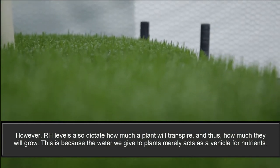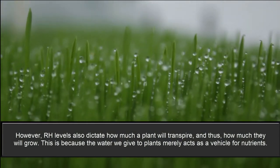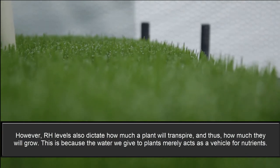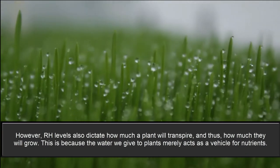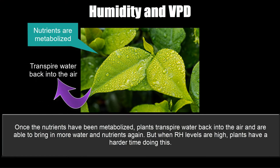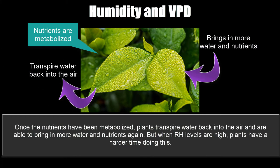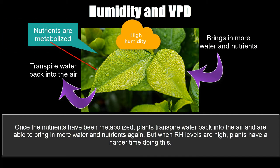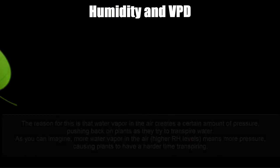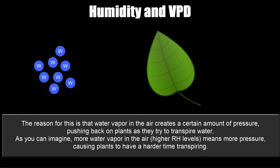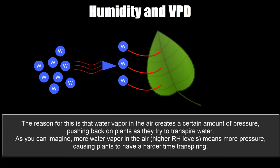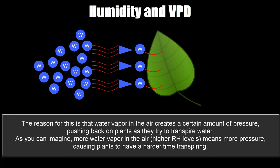RH levels also dictate how much a plant will transpire and how much they'll grow. This is because the water we give the plants merely acts as a vehicle for nutrients. Once the nutrients have been metabolized, plants transpire water back into the air and are able to bring in more water and nutrients again. But when RH levels are high, plants have a harder time doing this. The reason is that water vapor in the air creates a certain amount of pressure pushing back on plants as they try to transpire water. More water vapor in the air — higher RH levels — means more pressure, causing plants to have a harder time transpiring.